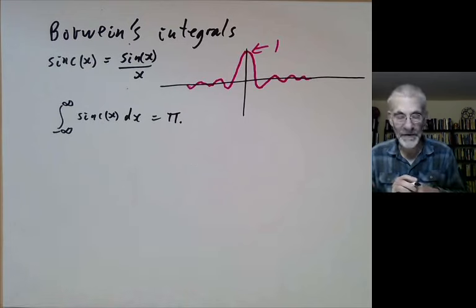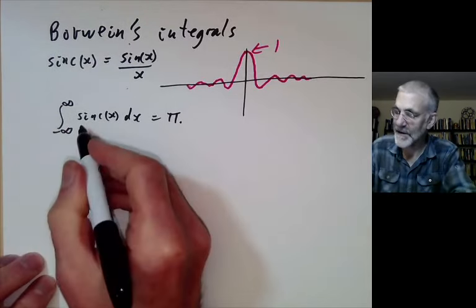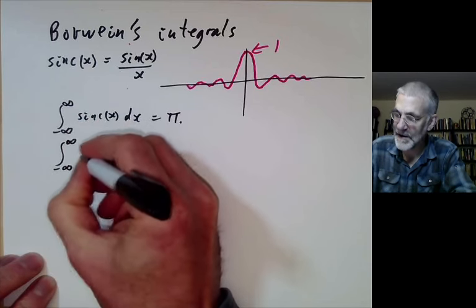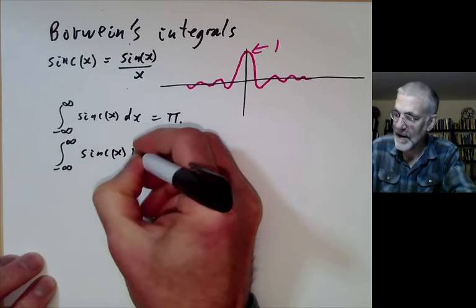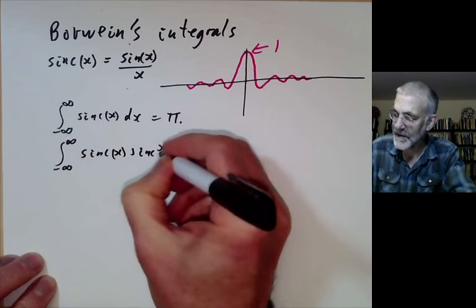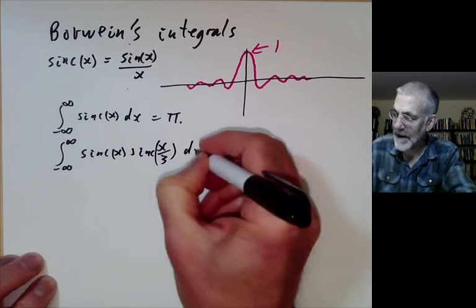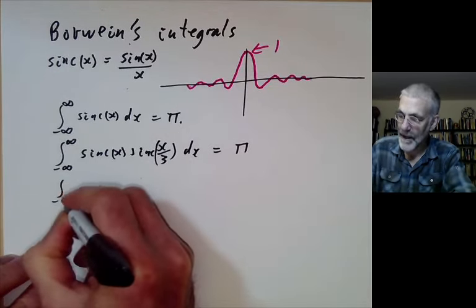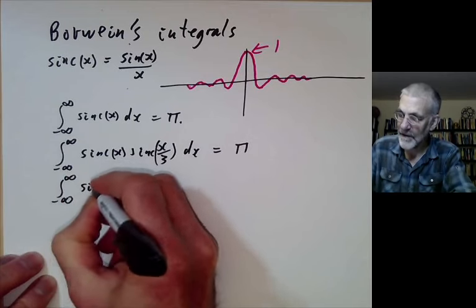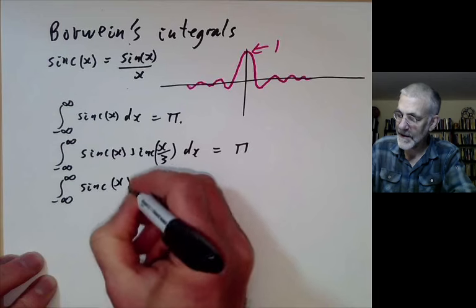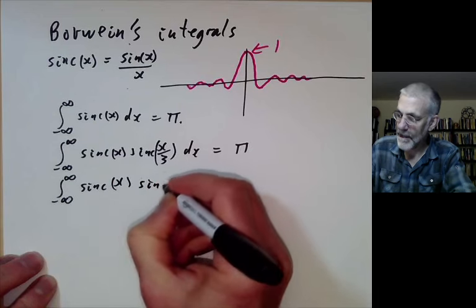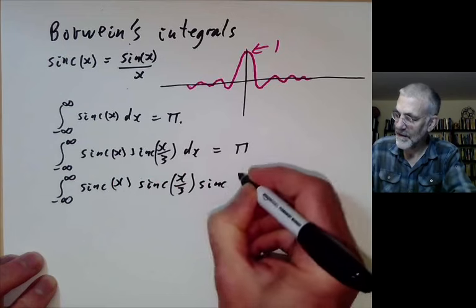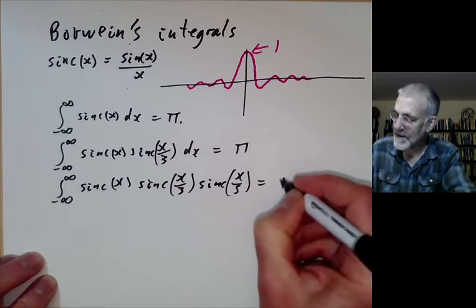Borwein's integrals are a sort of generalisation of this. The next one is the integral from minus infinity to infinity of sinc of x times sinc of x over 3 dx, and this is still pi. And then you can do the integral of sinc of x times sinc of x over 3 times sinc of x over 5, and this is still pi.